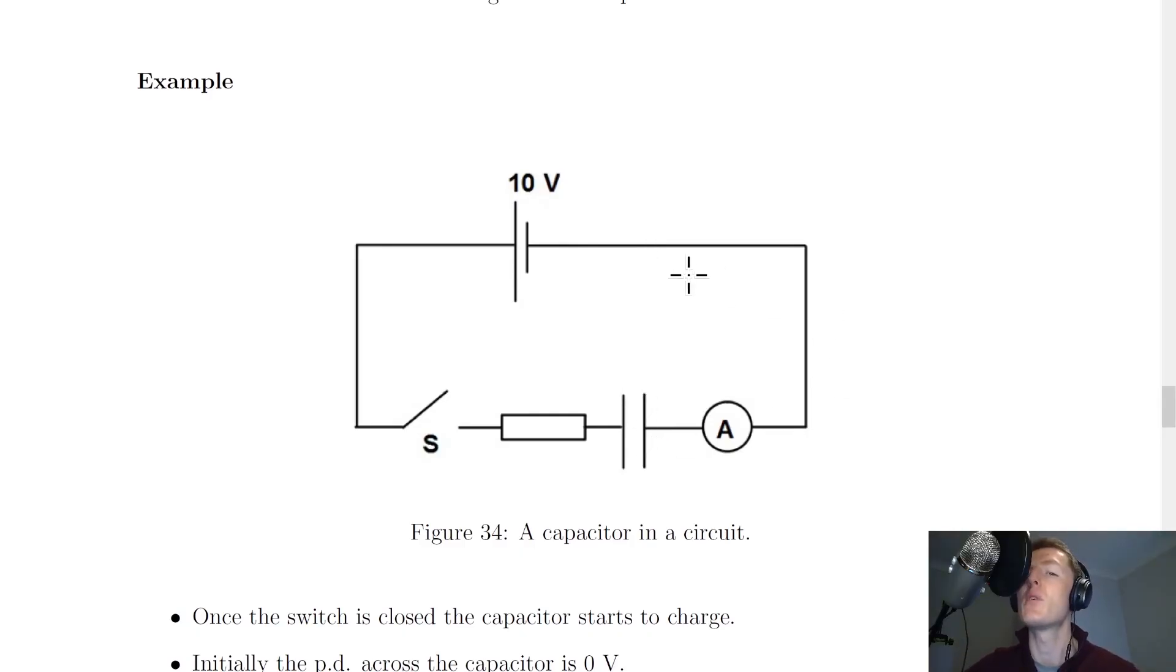This is going to make it more difficult for electrons approaching this negatively charged plate. Therefore, the current will decrease and decrease until eventually no more current can flow when the capacitor is fully charged.